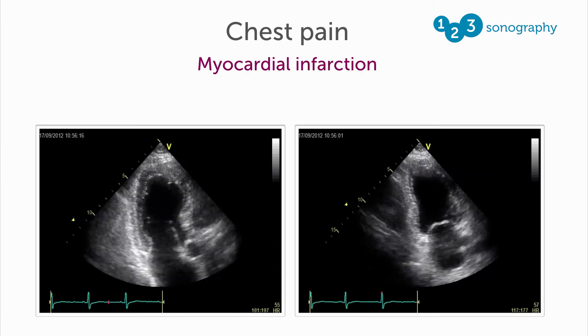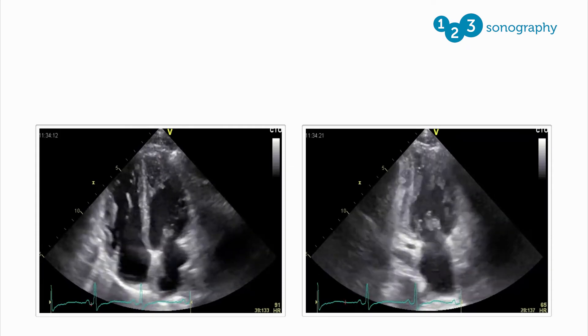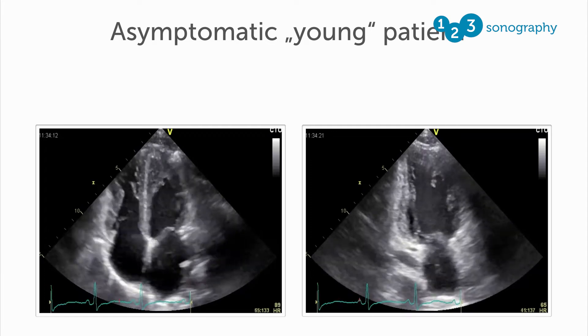Then you have the patient who comes in with chest pain where you are looking for regional wall motion abnormalities — which can be very difficult, especially when image quality is poor. And sometimes patients come in where you're not sure if they have early dilated cardiomyopathy or just subnormal left ventricle function. In all of these situations, it would be really helpful to have another tool besides ejection fraction to determine true LV function.